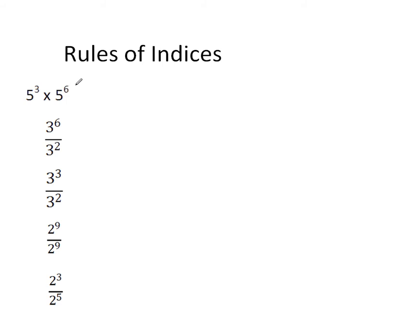Count the number of 5s that you've got — you should see that there are 9. There are 3 from the 5 cubed, 6 from the 5 to the power 6, and so when you write that in shorthand, it should equal 5 to the power 9. This gives us our first rule from GCSE: when you have two numbers with the same base, here 5, and you multiply them, you simply add the indices.